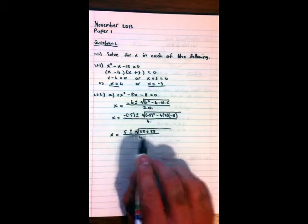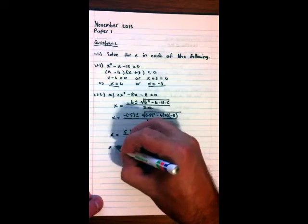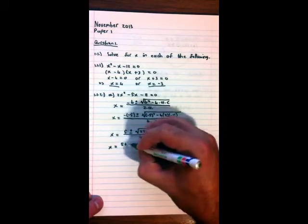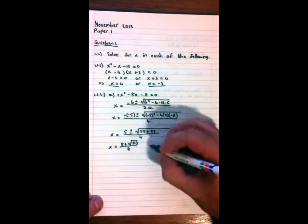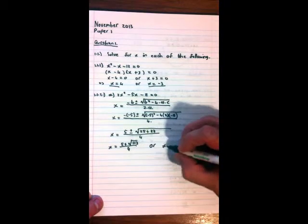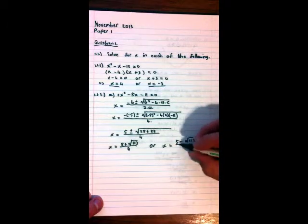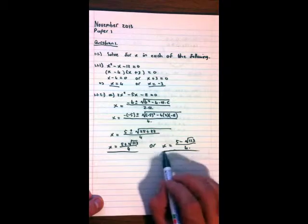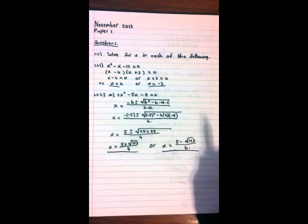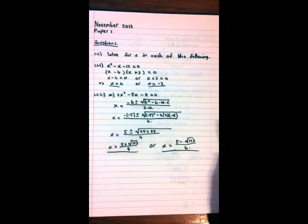Okay, 25 plus 88, 113. So now we have that x = (5 + √113) / 4, or x = (5 - √113) / 4. There you go, that's your answer. If they want it in decimal notation, you can just type this in your calculator and it will give you the answer in decimals and you can round off to whatever the paper says you have to.